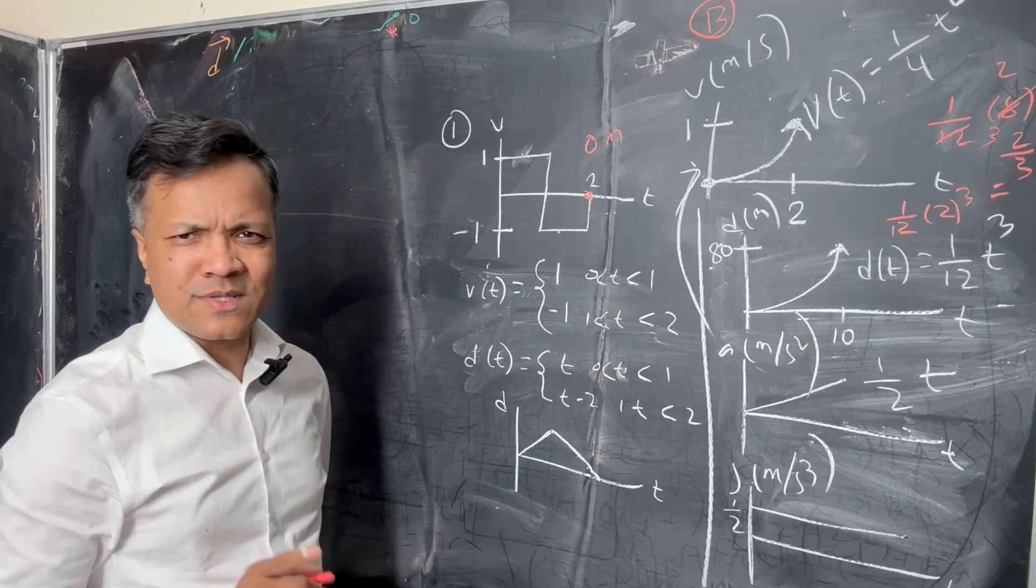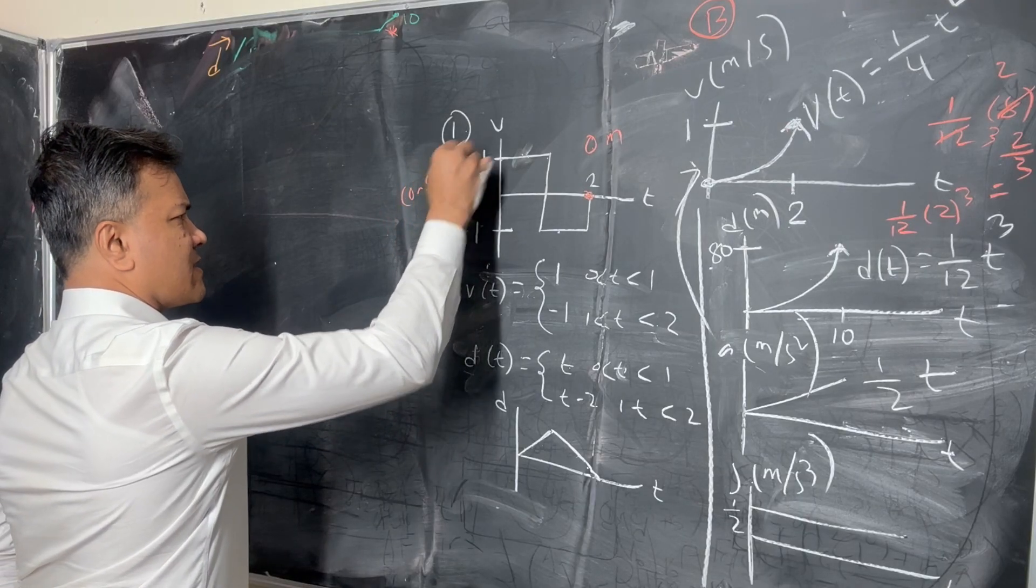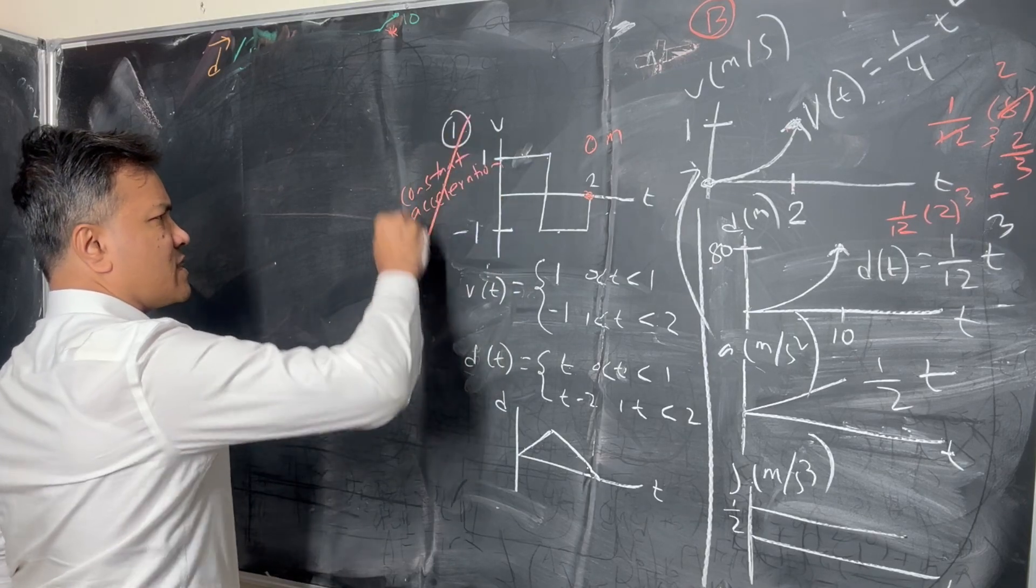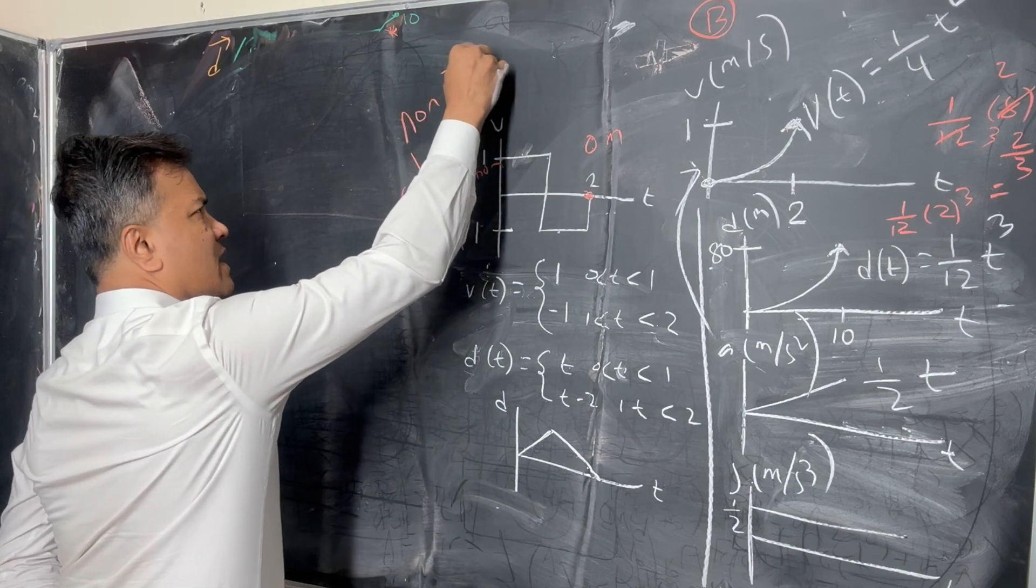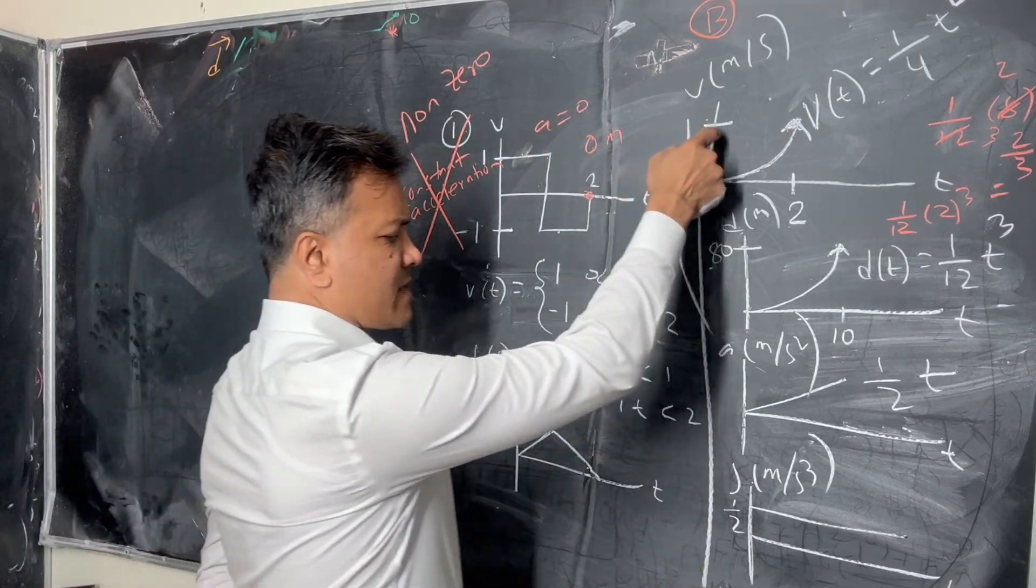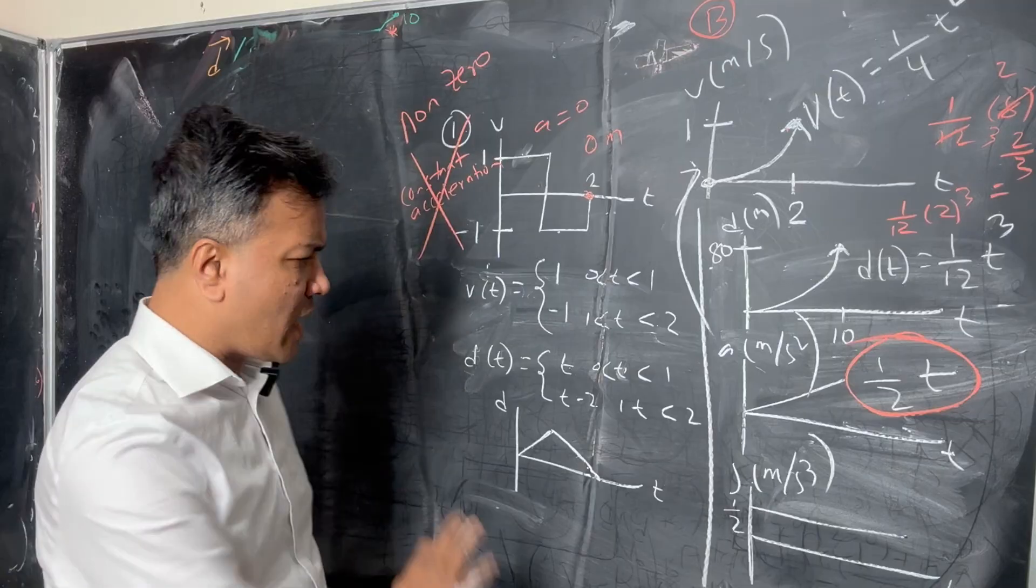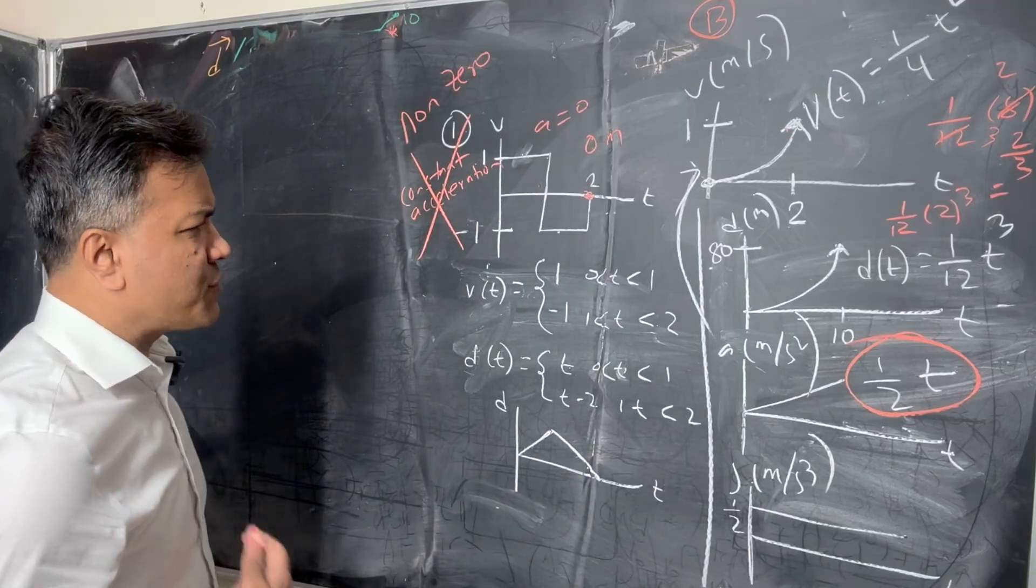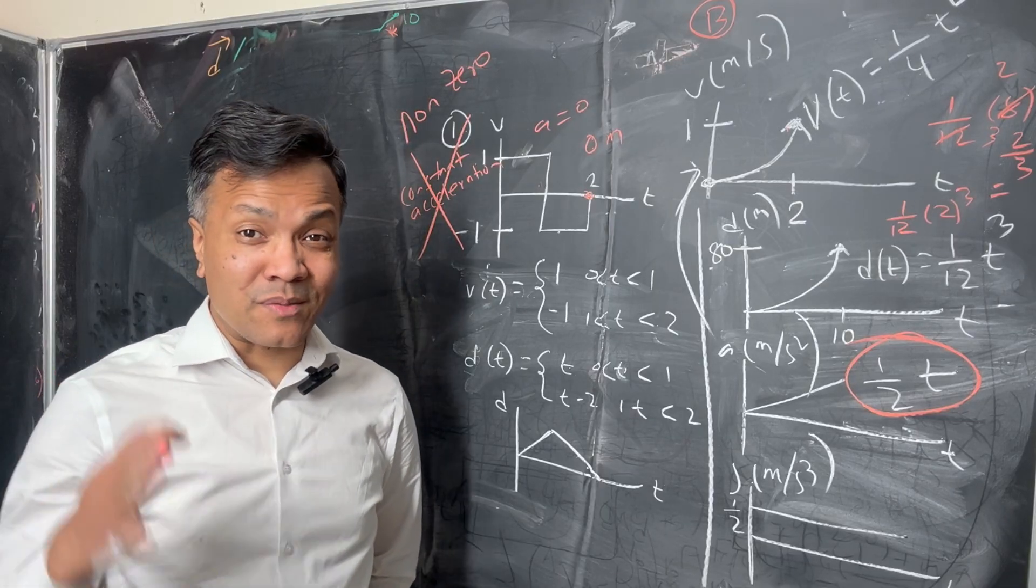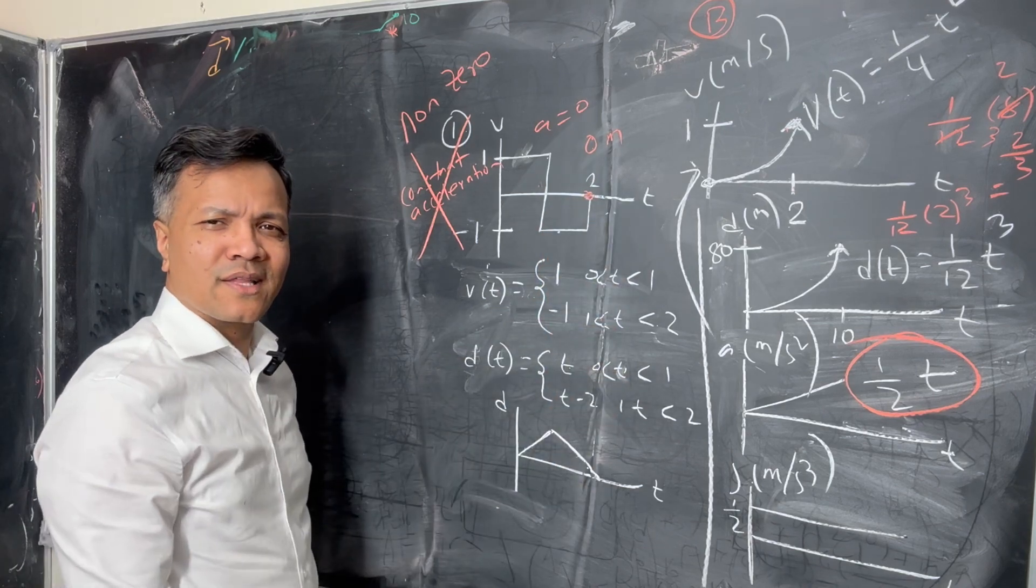Question number 2 is: which object moves with non-zero constant acceleration? This is constant acceleration, but this is not non-zero. In fact, this is 0 acceleration. This one's acceleration is not constant, it's linear. So none of them. Question number 3 is: which one is back to origin at the end of 2 seconds? That's like question number 1. The object is back to origin at the end of 2 seconds in diagram 1.